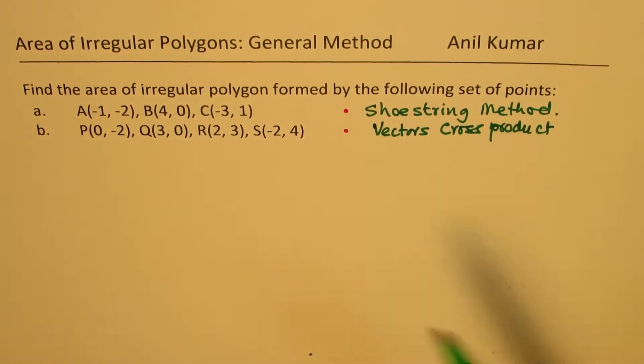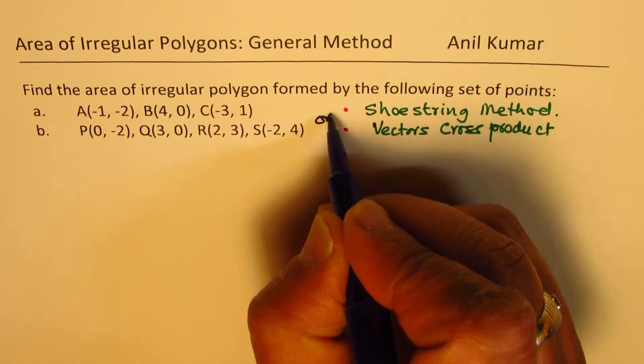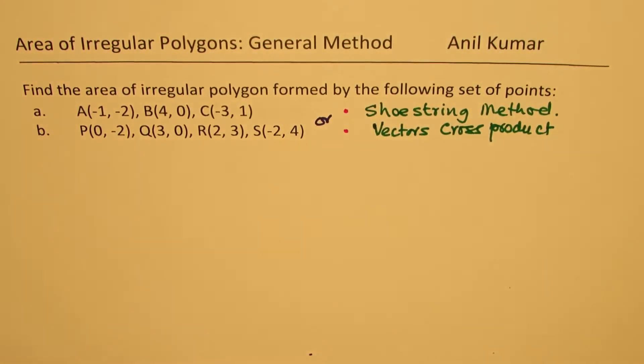We also call vectors cross-product. These are actually the same method, but these are alternate names. Both are same methods.